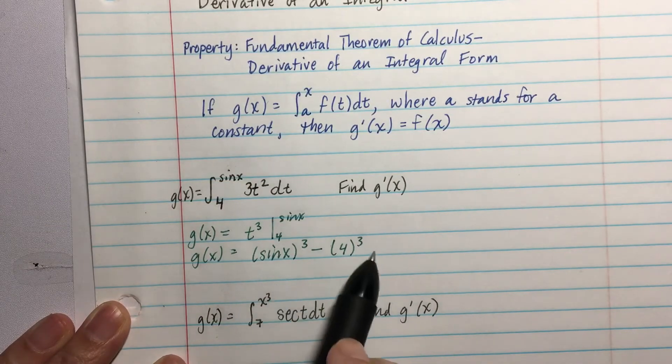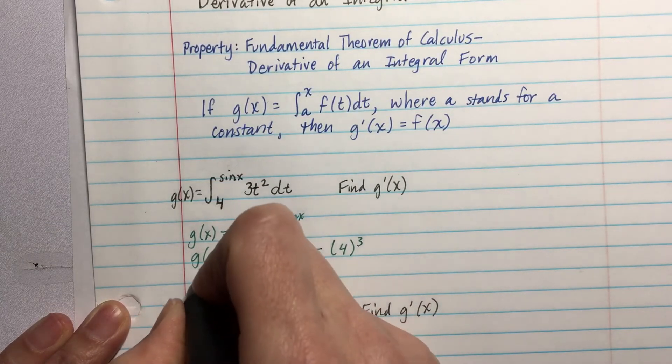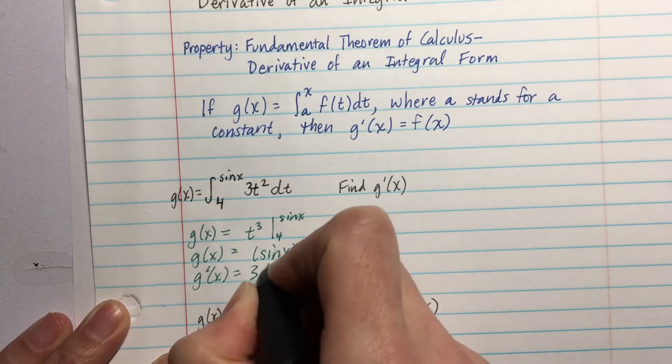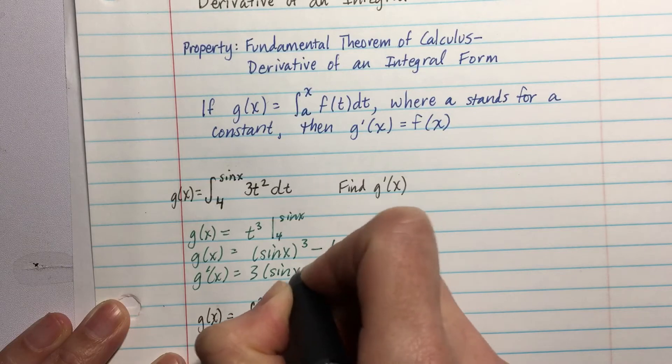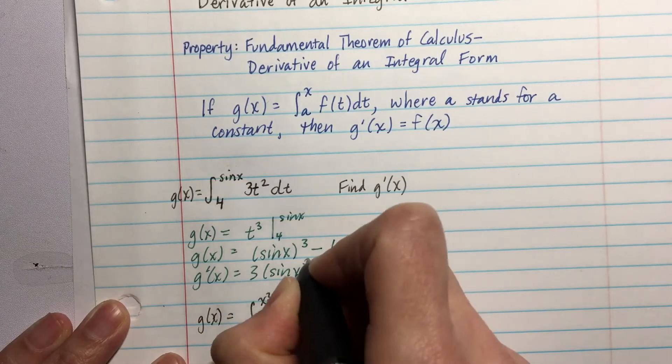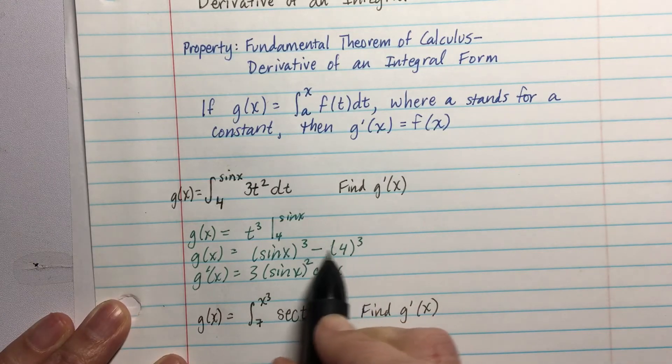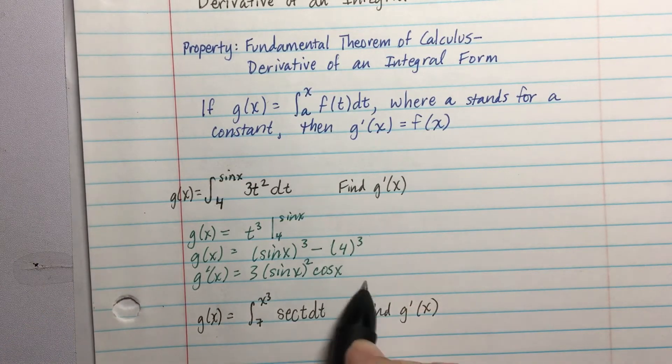And if I derive this, I get g'(x) equals, well, I get 3, derivative of the outside, keep the inside the same, to the second, and then times derivative of the inside gives me a cos(x). And then the derivative of 4³ is 0. So here I am.